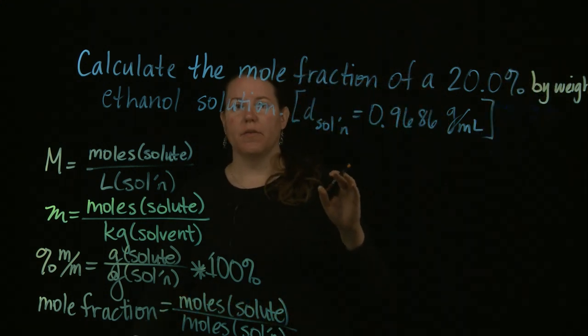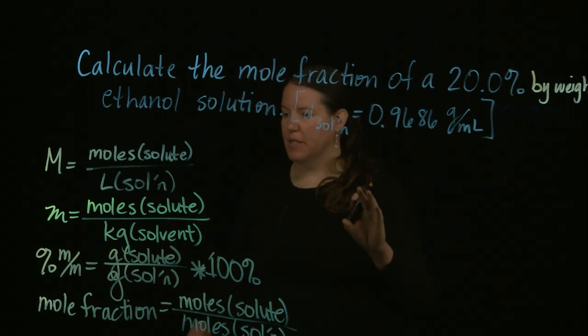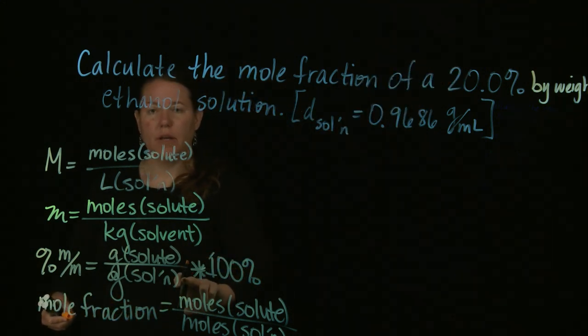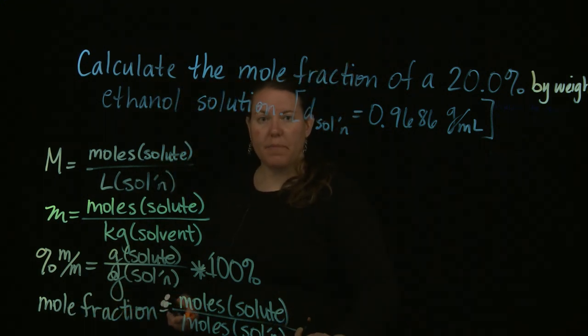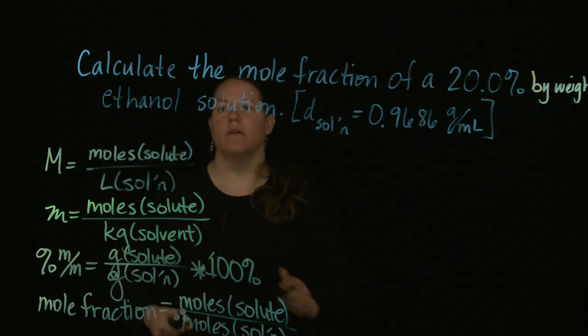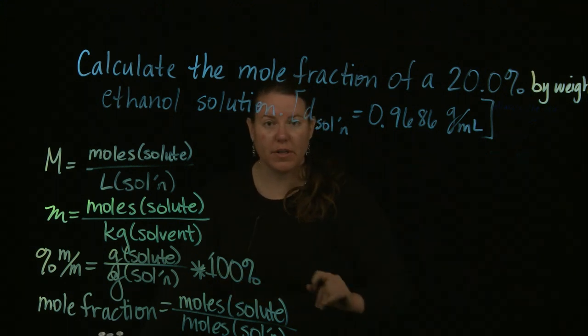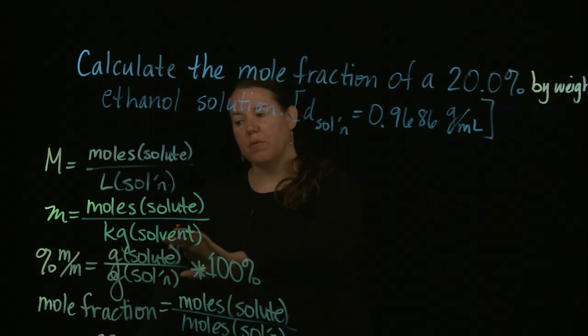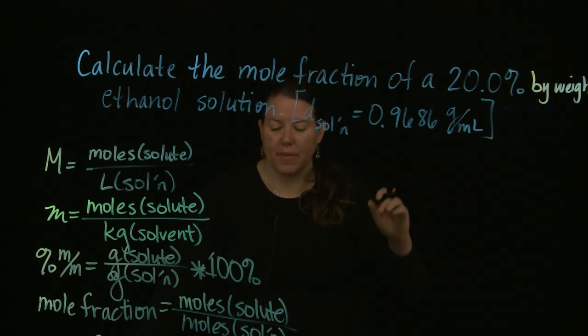Then I need to figure out where I am and where I'm going. What's nice about this is when I have the 20 percent by weight, notice that it has the solute on top and the solution on the bottom. And what I'm going towards, the mole fraction has solute on top and solution on the bottom. Which means that I don't have to do radical, crazy things in order to get from one to the other. All that I have to do is convert. I need to put the mass, percent by mass, in a way that I can do something with it. And then I just need to convert to moles. How do I do that?